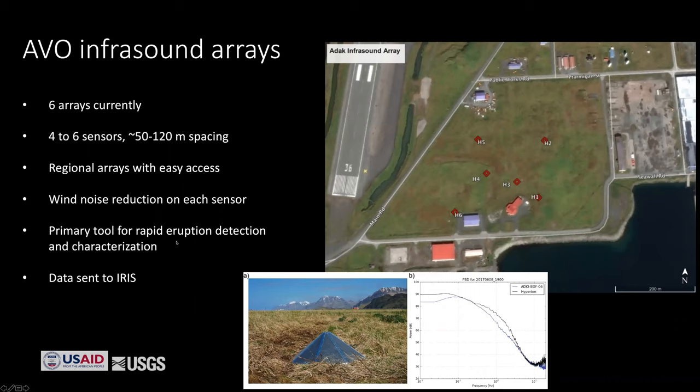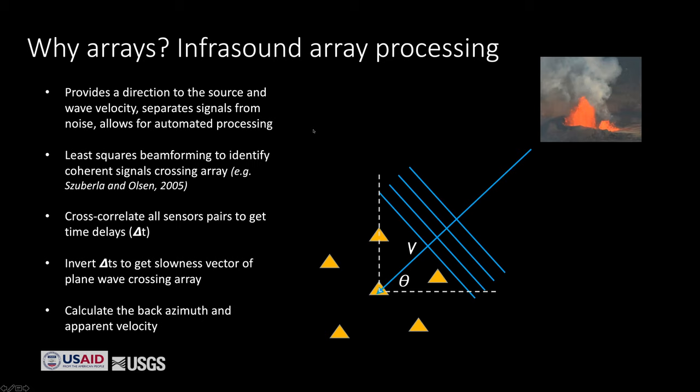Infrasound is now a primary tool for rapid detection of explosive eruptions in Alaska, and we send all of our infrasound data to IRIS, so it's publicly available. A common question is why do we need an array rather than just one sensor. An array provides a direction to the source of sound as well as the wave speed — these are really powerful pieces of information for separating a real source from noise automatically.